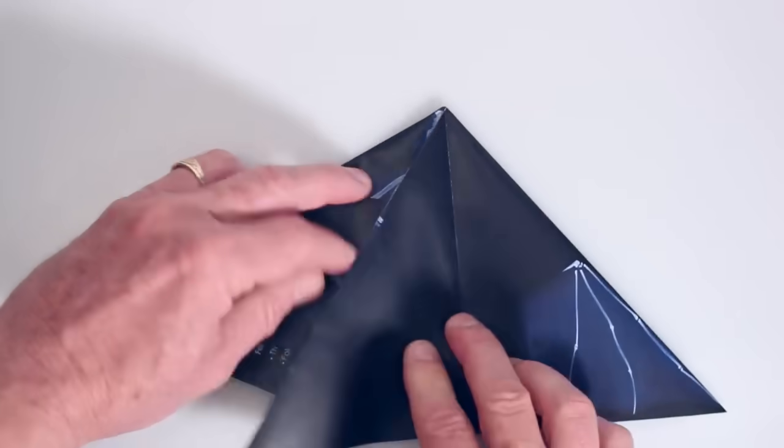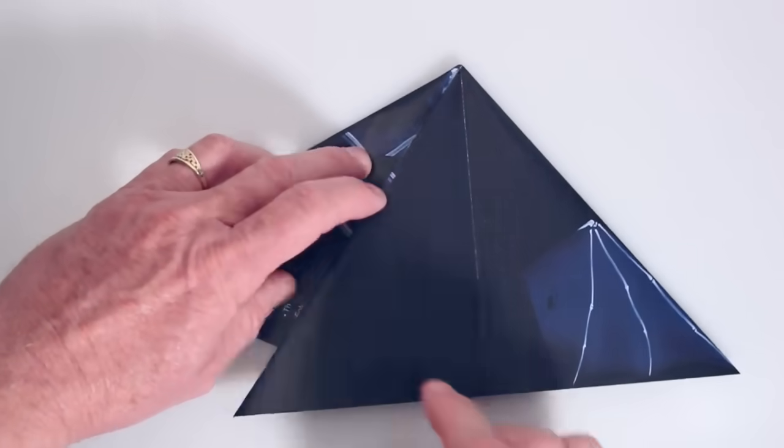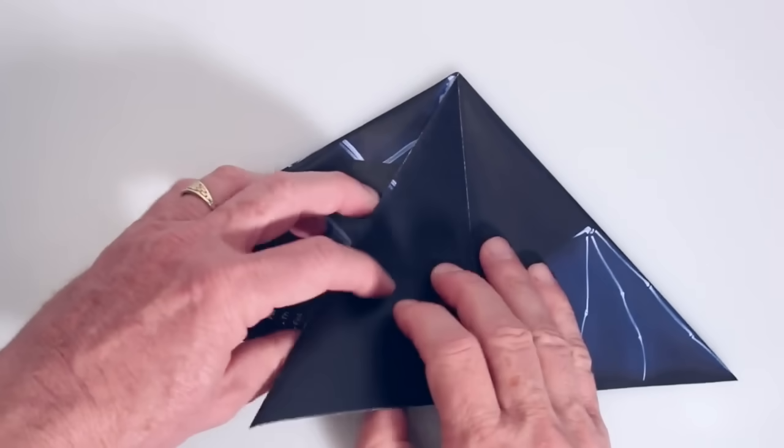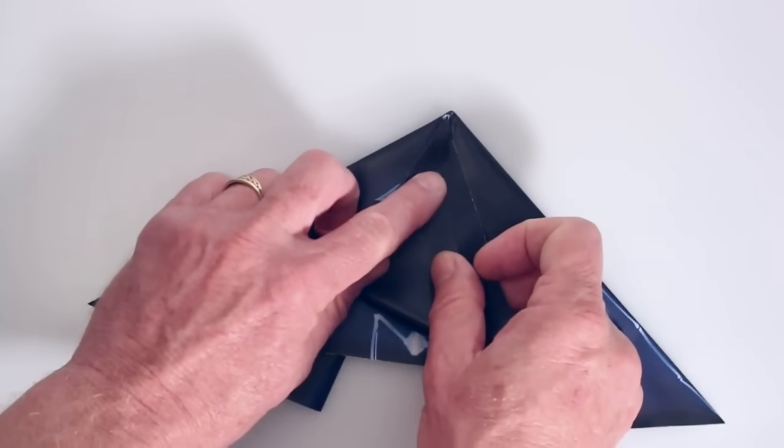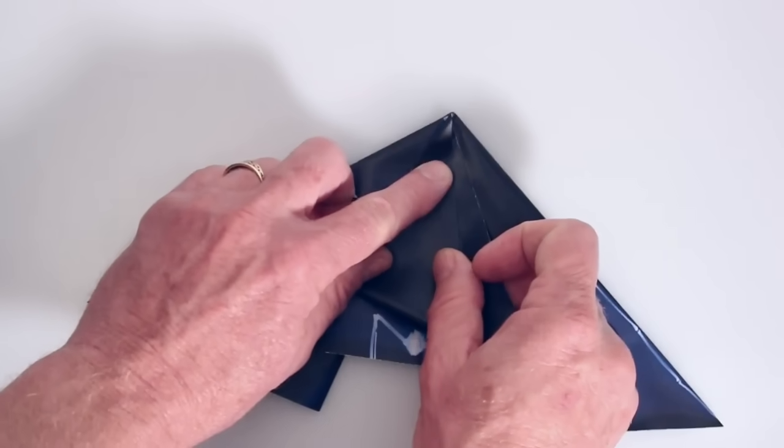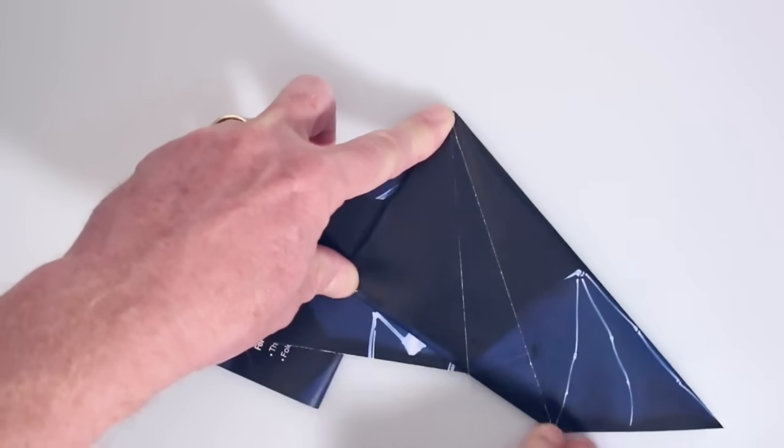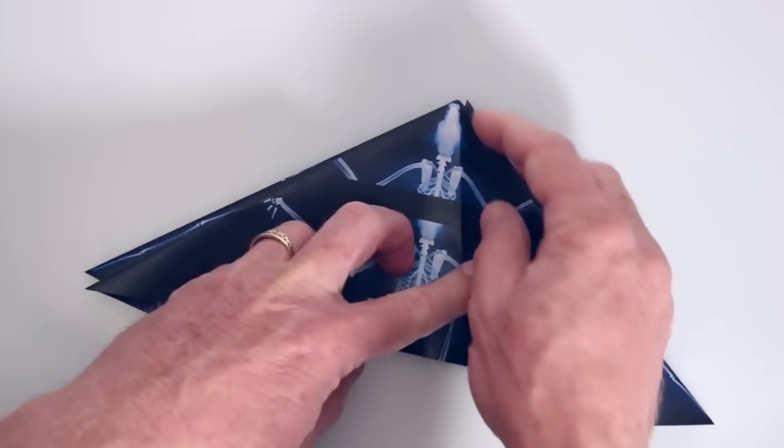So we've moved that corner over, pretty simple, just pretty much as far as you can fold it over. Then we're going to take the corner up to the top. Like that. And then we're going to swing it back over the direction it came from.